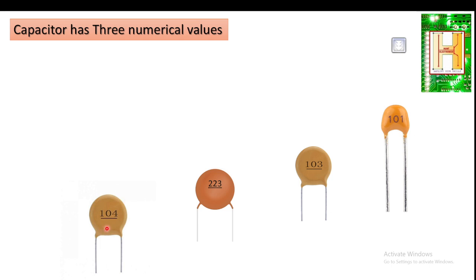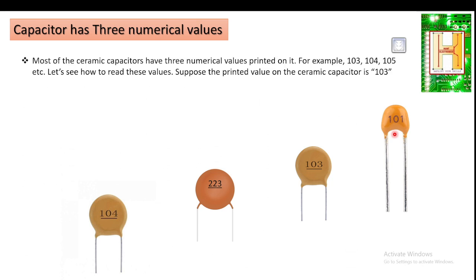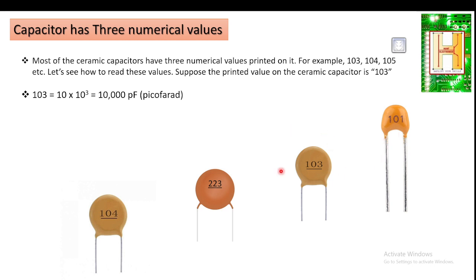Similarly, you will find three-value numerical capacitors — for example 104, 223, 103, 101. Most ceramic capacitors have three values printed on them, such as 103, 104, 105. The first two digits indicate the numerical value, and the third digit indicates the number of zeros to be added — or equivalently, it is the power of 10. The answer is always in picofarad.